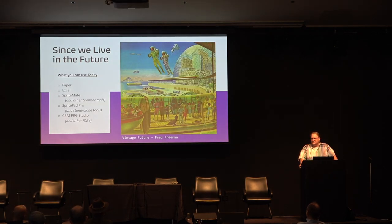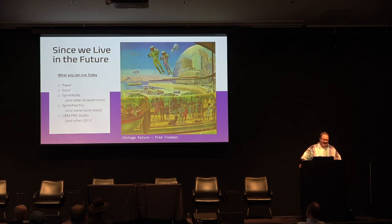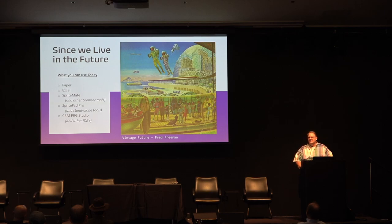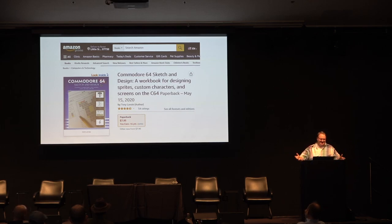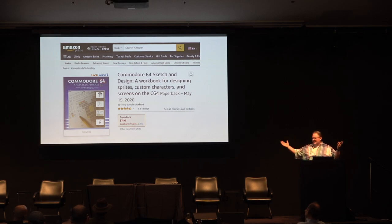But we live in the future — we don't have to use Commodore 64 software to build sprites if we don't want to. This list is ordered from the least amount of help to the most. You could still use paper — there's actually a product on Amazon right now, essentially fancy graph paper, if you wanted to do it like in the 1980s.